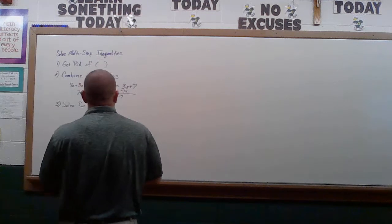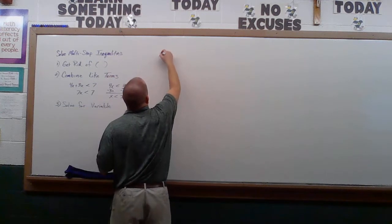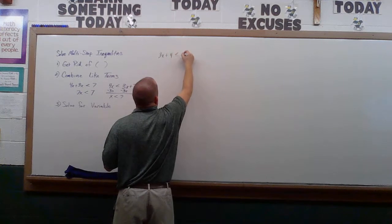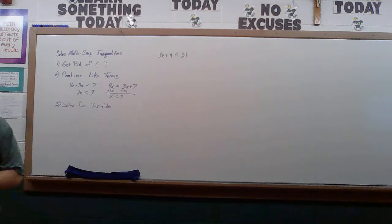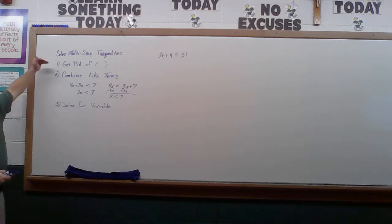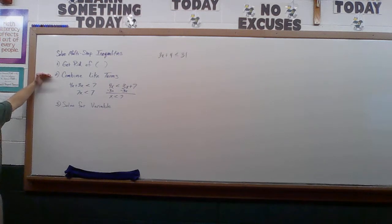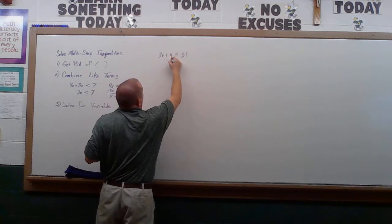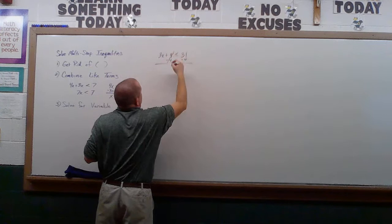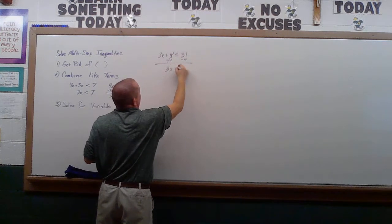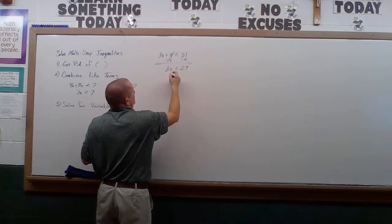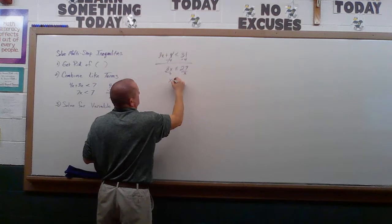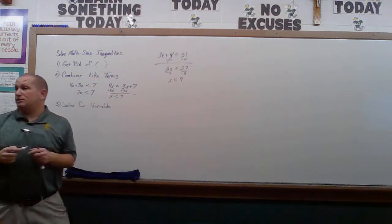Let's look at example one: 3x + 4 ≤ 31. There are no parentheses, and there's only one variable, so we skip the first two steps and go straight to solving. Cover up the x — how do I get rid of plus 4? Subtract 4 from both sides. Same number, different signs, they cancel out. 3x ≤ 27, so dividing by 3: x ≤ 9.